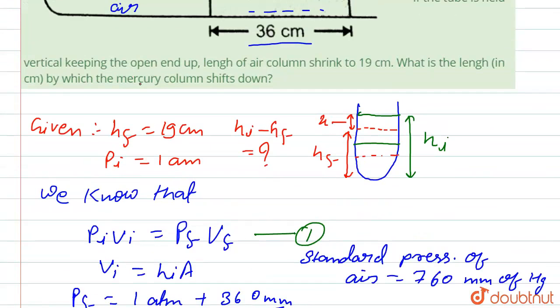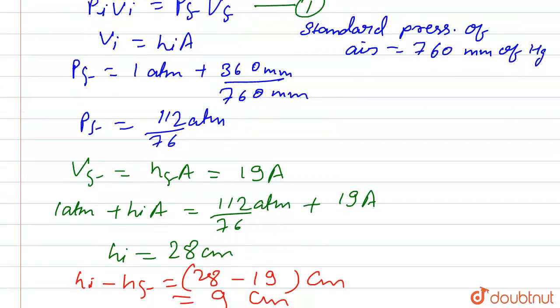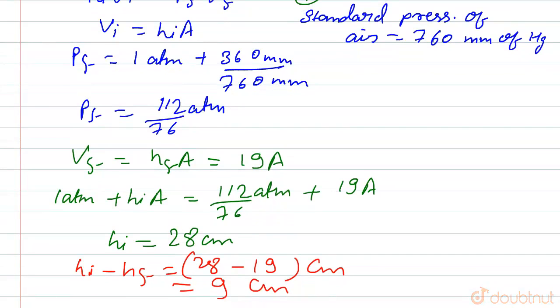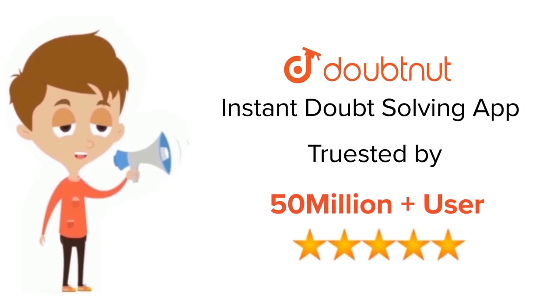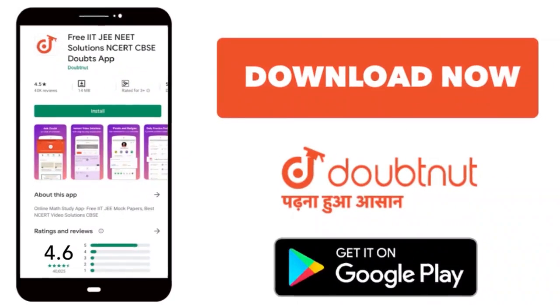by which the mercury column shift down, that is 9 cm. Thank you. For class 6 to 12th, IIT-JEE and NEET level, trusted by more than 5 crore students, download Doubtnet app today.